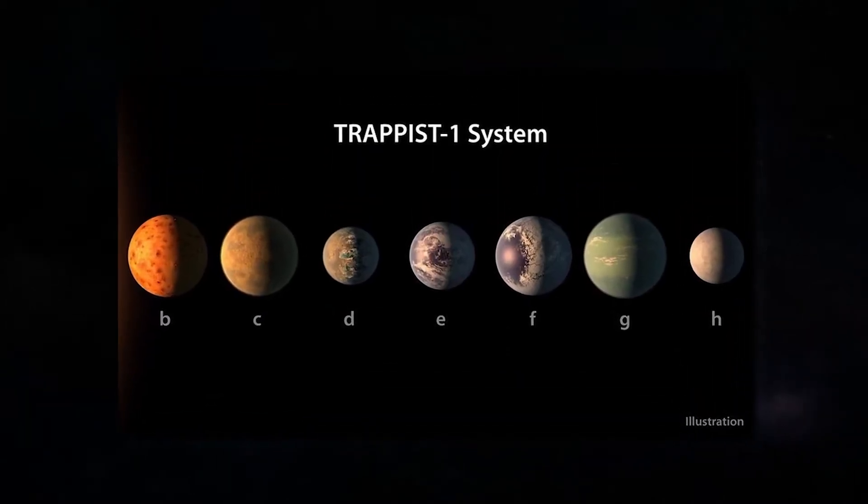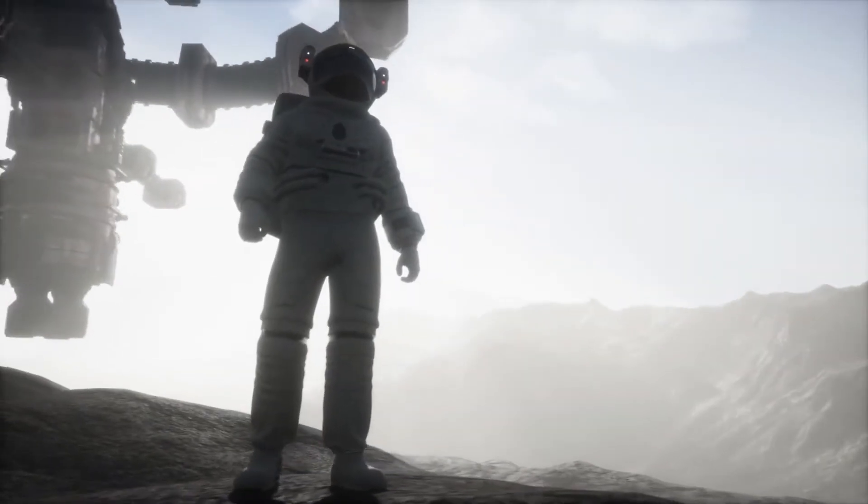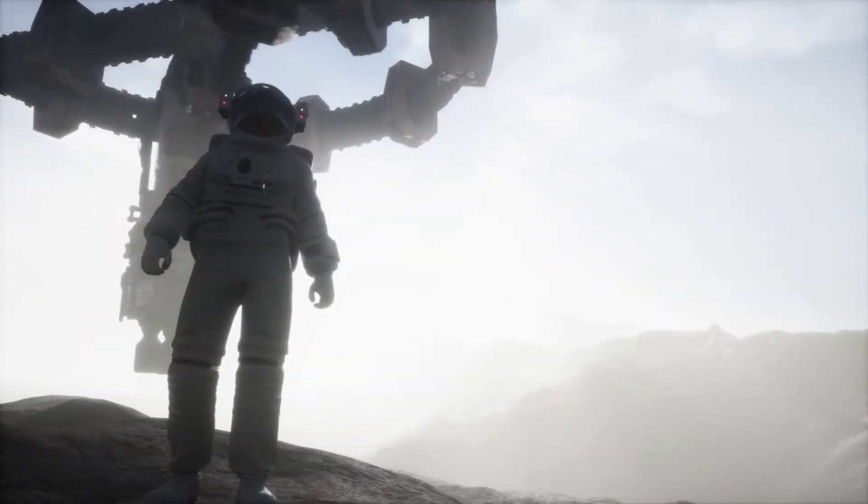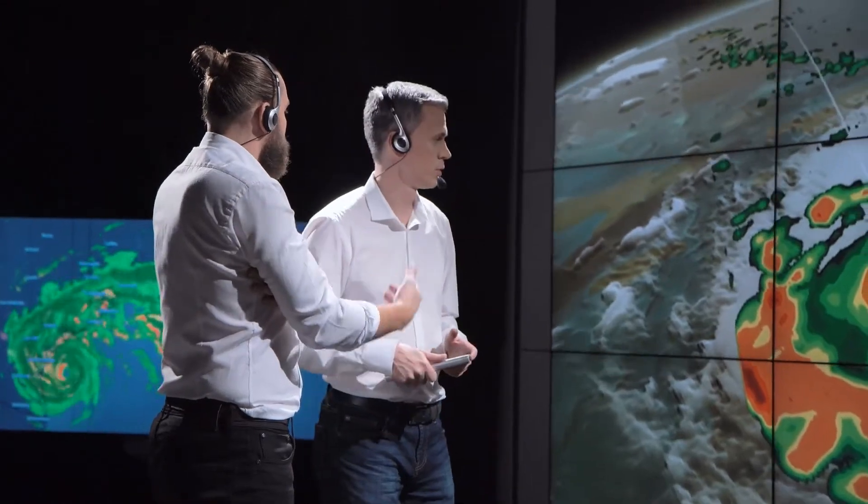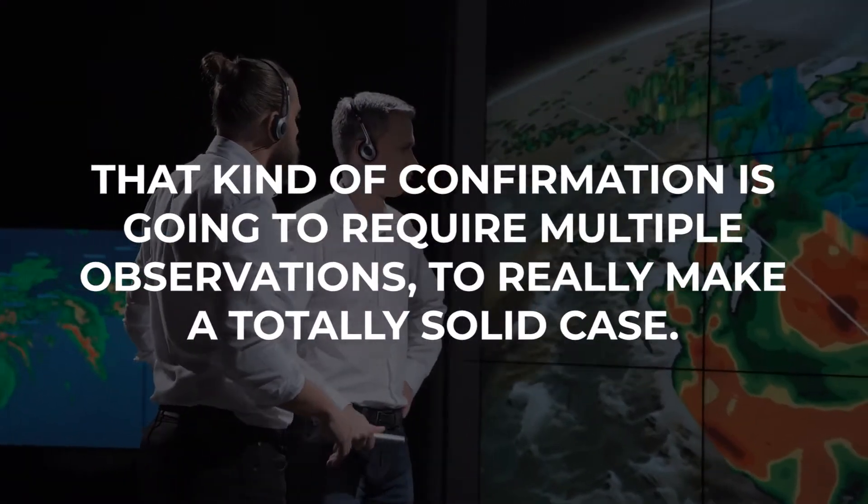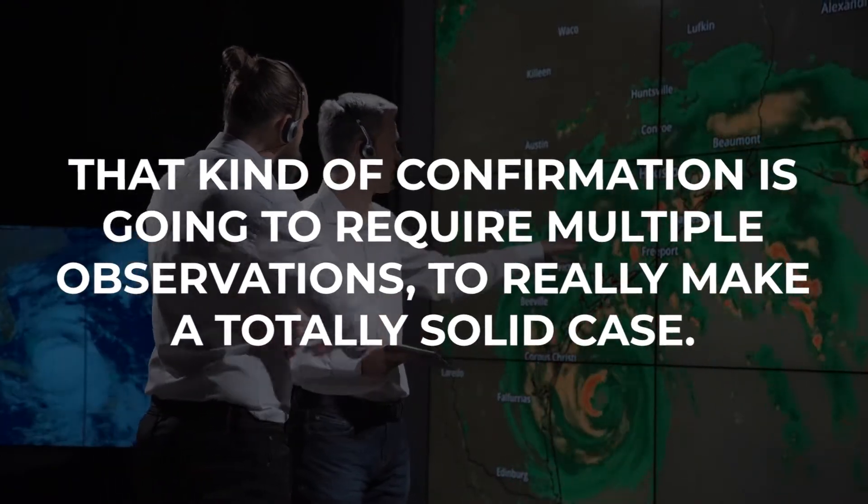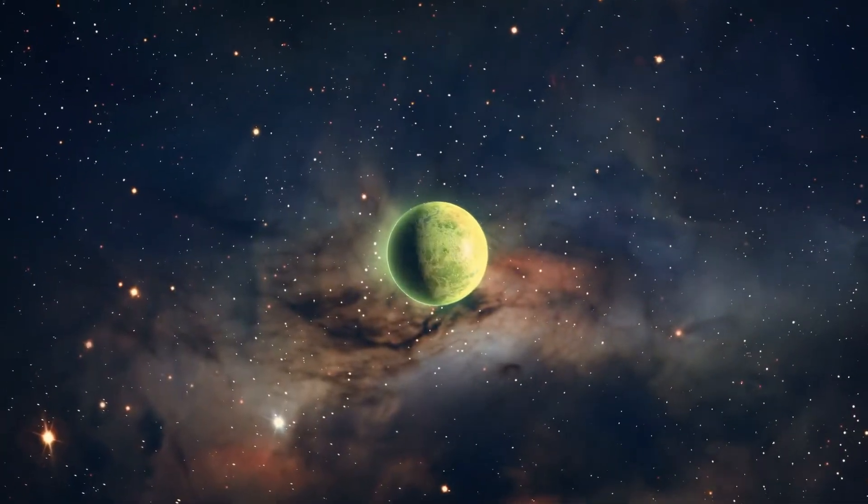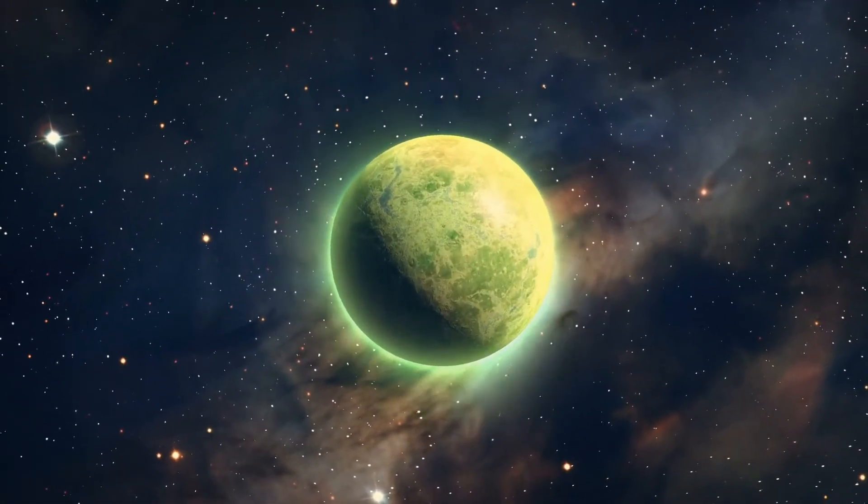So if the atmosphere of TRAPPIST-1e was found to be awry, researchers would then need to rule out any non-biological effects before declaring the existence of extraterrestrial life. Researchers say that kind of confirmation is going to require multiple observations to really make a totally solid case. But if we detect something that we don't have an alternative explanation for, that would be an incredibly exciting discovery.